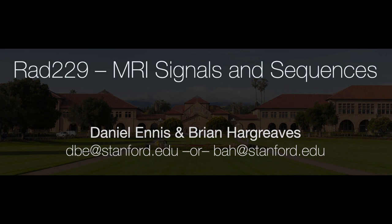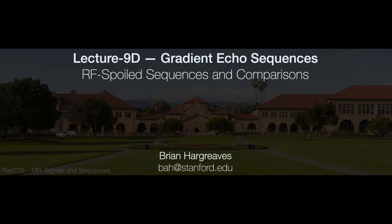This lecture is part of a series of lectures for RAD229 MRI Signals and Sequences offered in the Department of Radiology at Stanford University. The ninth lecture on gradient echo sequences is divided into four parts. Lecture 9D covers RF spoiled sequences and compares different spoiling methods.